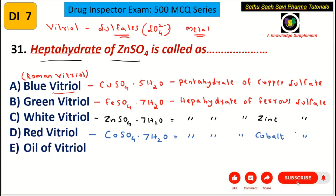Oil of vitriol is simply sulfuric acid — H₂SO₄. So the question asked about the heptahydrate of zinc sulfate, and the correct answer is definitely white vitriol: ZnSO₄·7H₂O. The correct choice is C.